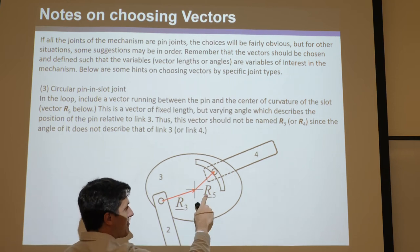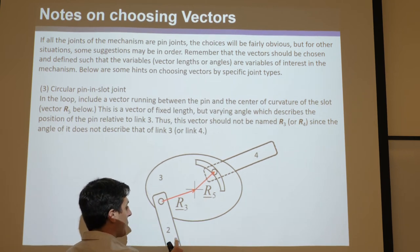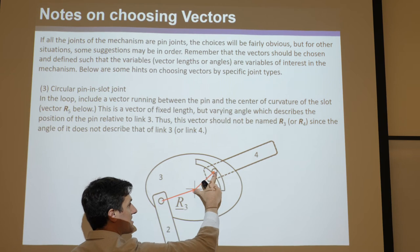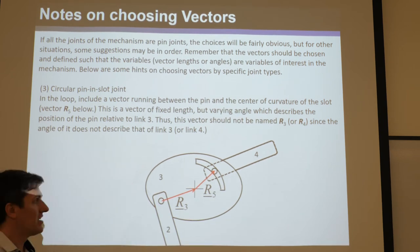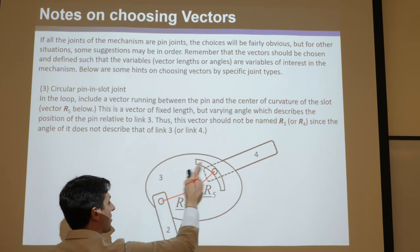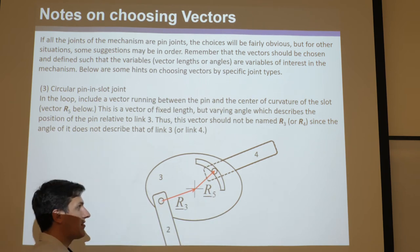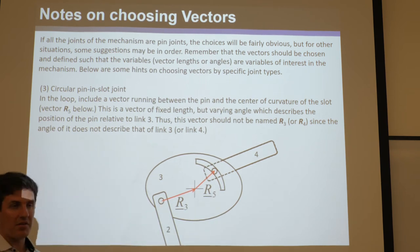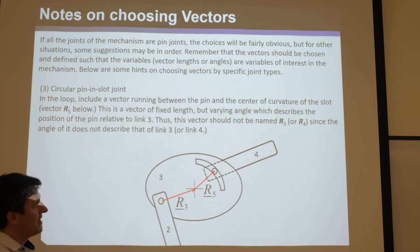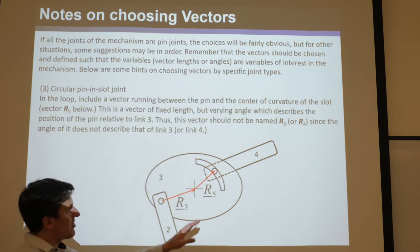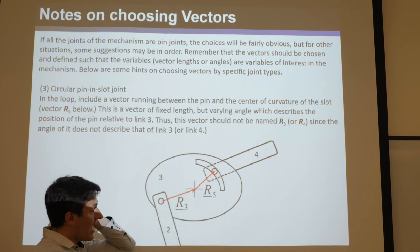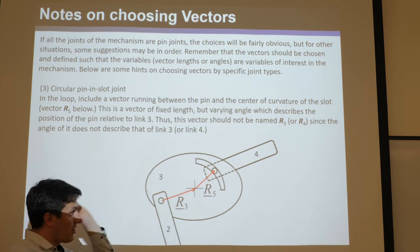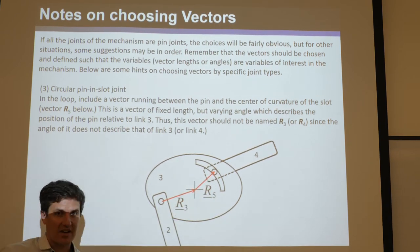You're going to name this auxiliary vector something other than the existing links — in this case links 2, 3, and 4 — because it doesn't capture the rotation of any of them. We call it R5 since there's no 5th link. You can call it R7, R8, R10, RL — anything you want. You need that vector, you need to name it something other than the links, and when you do the vector loop, you're going to know its magnitude.